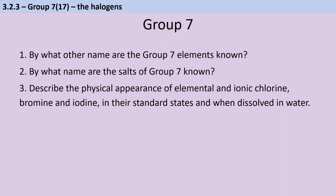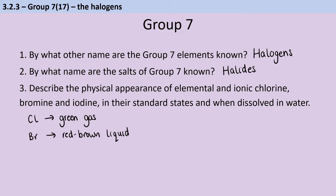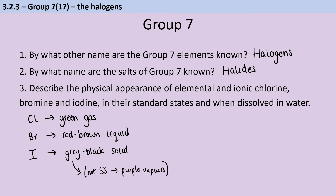Group 7 are also known as the halogens and the salts that they make are known as the halides. When chlorine is an element, it's a pale green gas. Bromine is a red-brown liquid and iodine is a grey-black solid, although when it's ever so slightly warmed, it does start producing these beautiful violet-purple vapours. But that's not its standard state because at room temperature it is a solid.